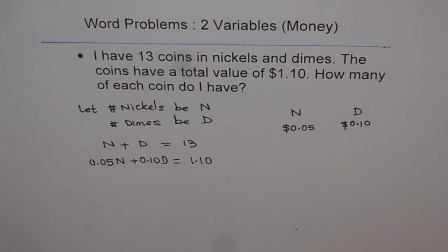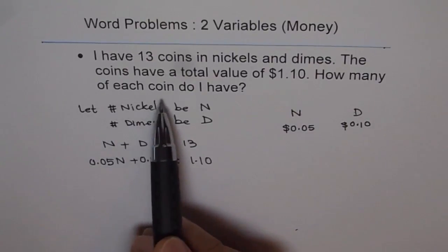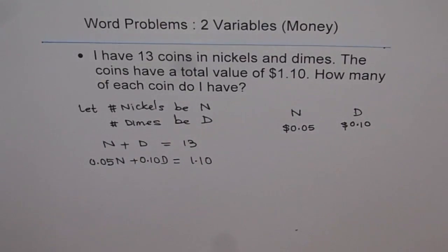Now, we have two equations and two unknowns. The unknowns are number of nickels and dimes. And that is what we need to find. How many of each coin do I have? That is, number of nickels and number of dimes. So let's solve. We can do substitution or elimination method. Here, I will prefer to do elimination.